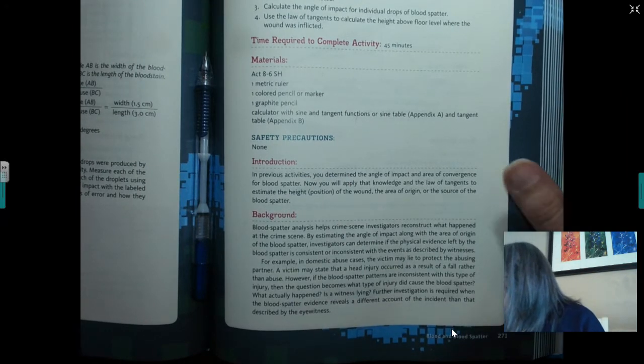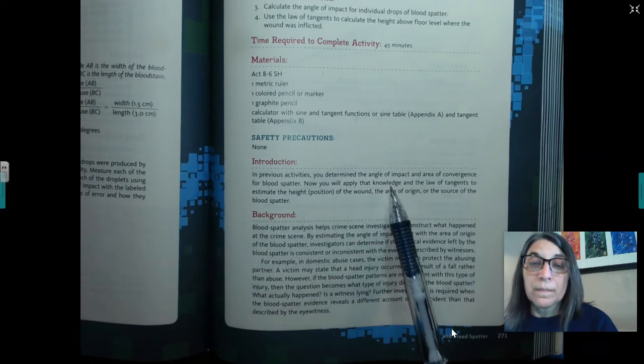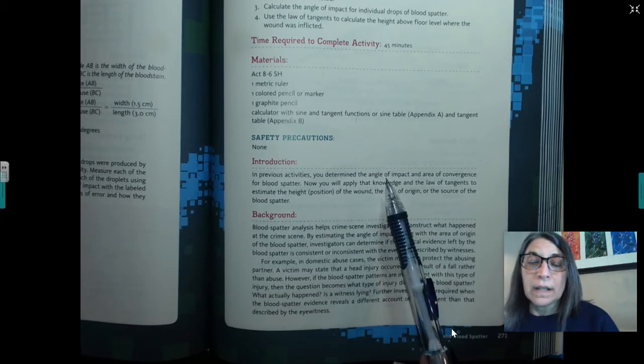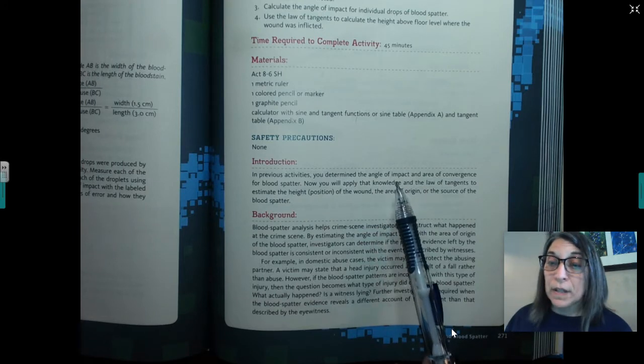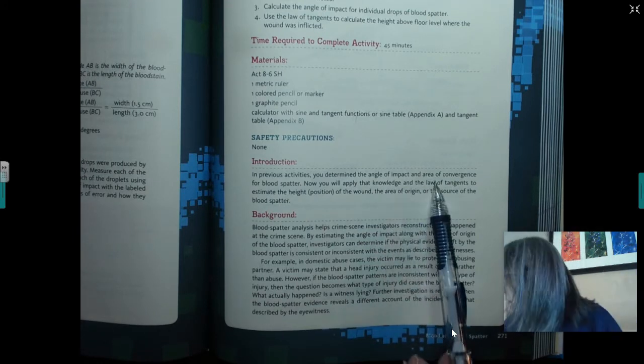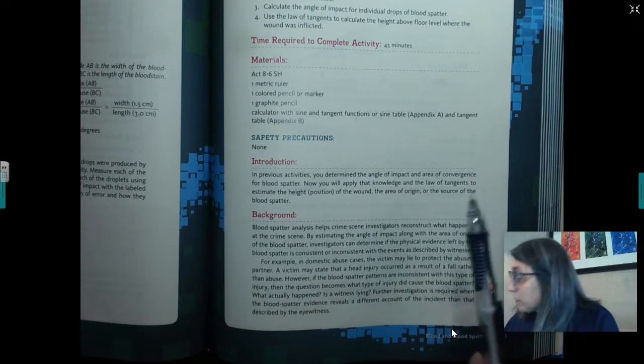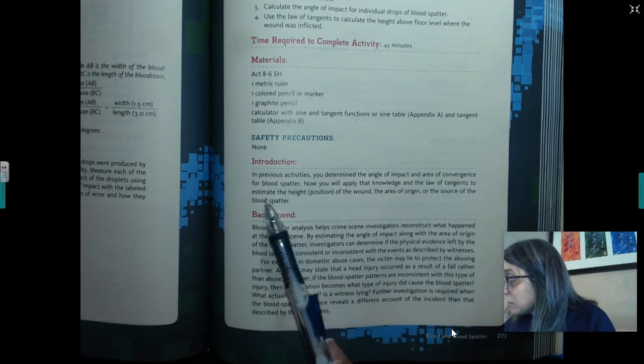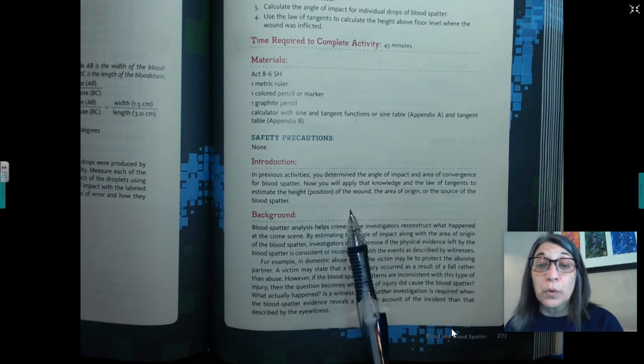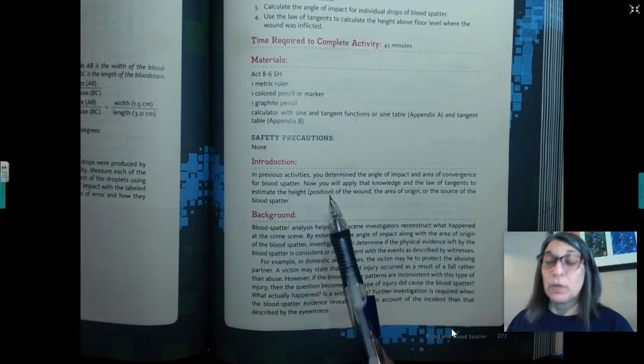So you've got your book, Activity 6. It's on page 271. I'm just gonna kind of read the intro. In the previous activities, you determined the angle of impact, which is the one where we had to measure the width and the length of each blood drop and then use the inverse sine to figure out its angle. And then the area of convergence for blood spatter, which is the one we just did, drawing the little lines and finding the area where they intersect.